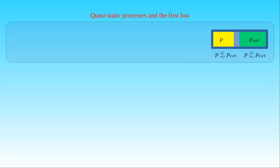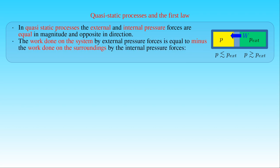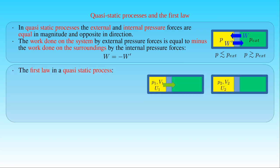We have already mentioned that in quasi-static processes the internal pressure and the external pressure are essentially the same on both sides of the moving wall separating the system from the surroundings. In other words, the external and internal pressure forces are equal in magnitude and opposite in direction. Then the work W done on the system by the external pressure forces is equal to minus the work W' done on the surroundings by the internal ones. Therefore, the first law can also be formulated with the equation stating that the heat Q exchanged between a thermodynamic system and the surroundings is equal to the difference between the internal energy U2 in its final state and the internal energy U1 in its initial state, plus the work W' done by the internal pressure forces.